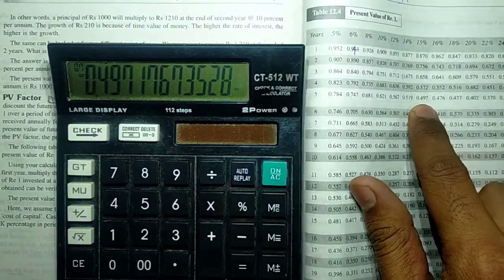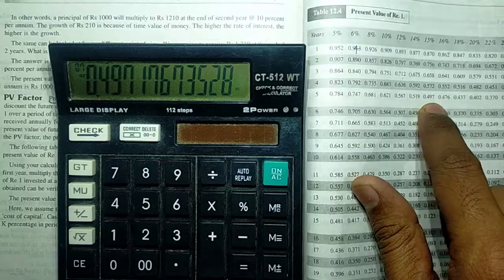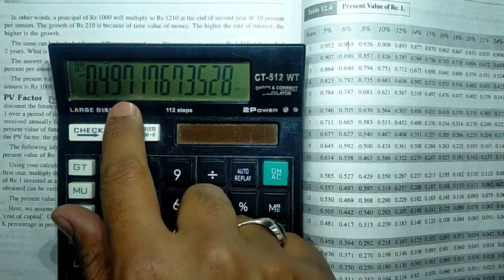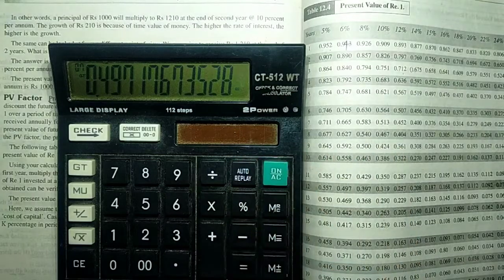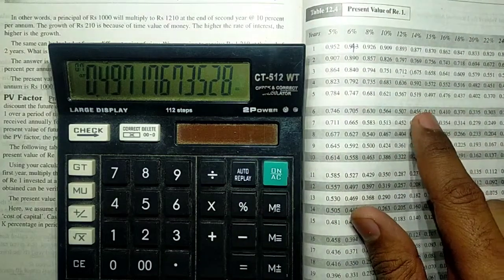It shows 0.497, the same 0.497. In this way you can get the PVIF.